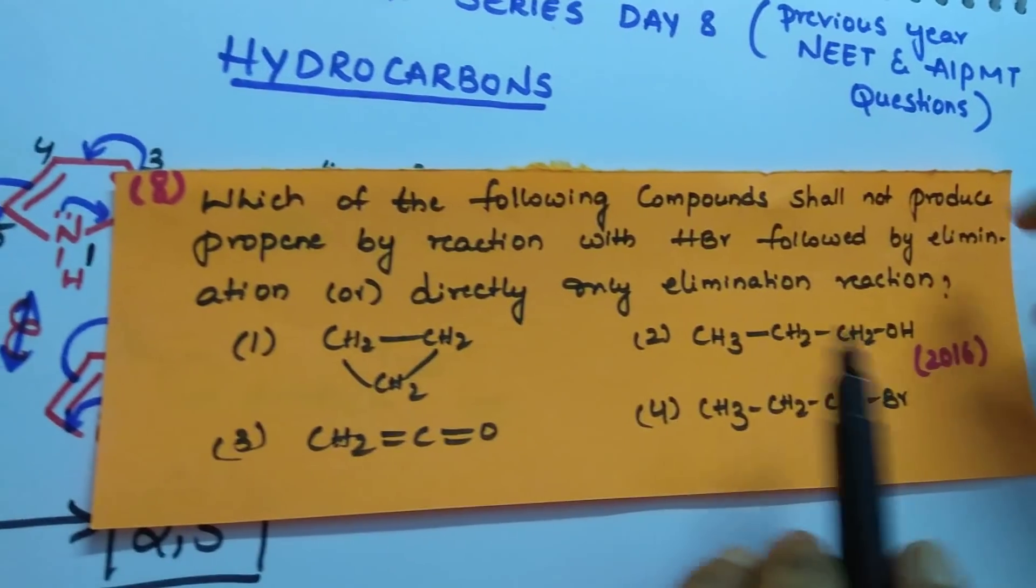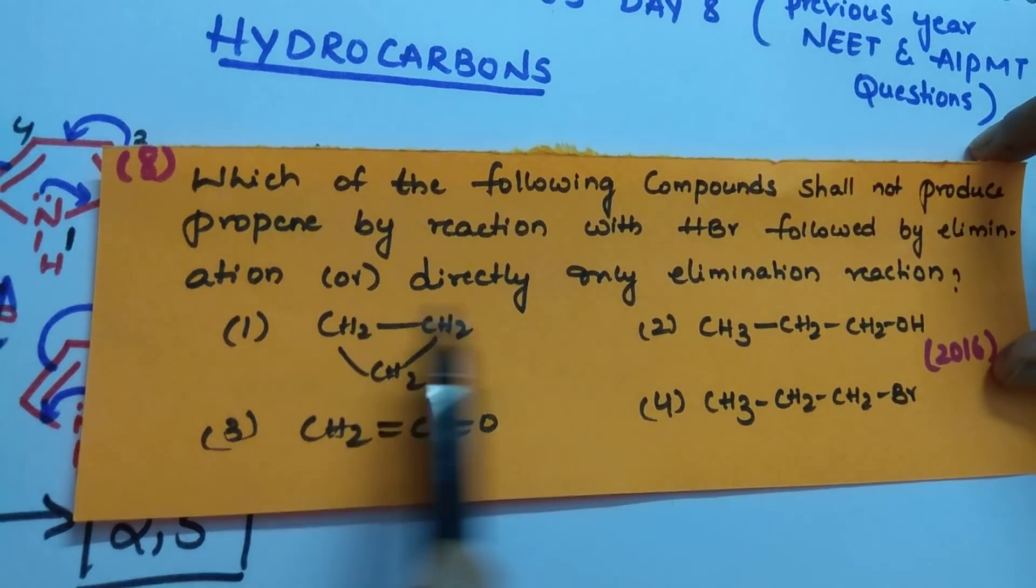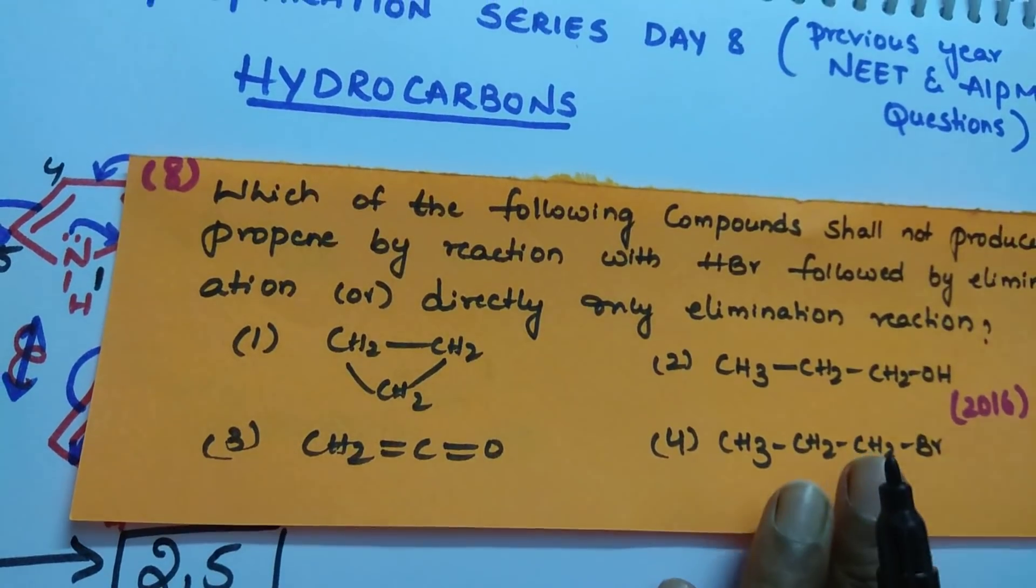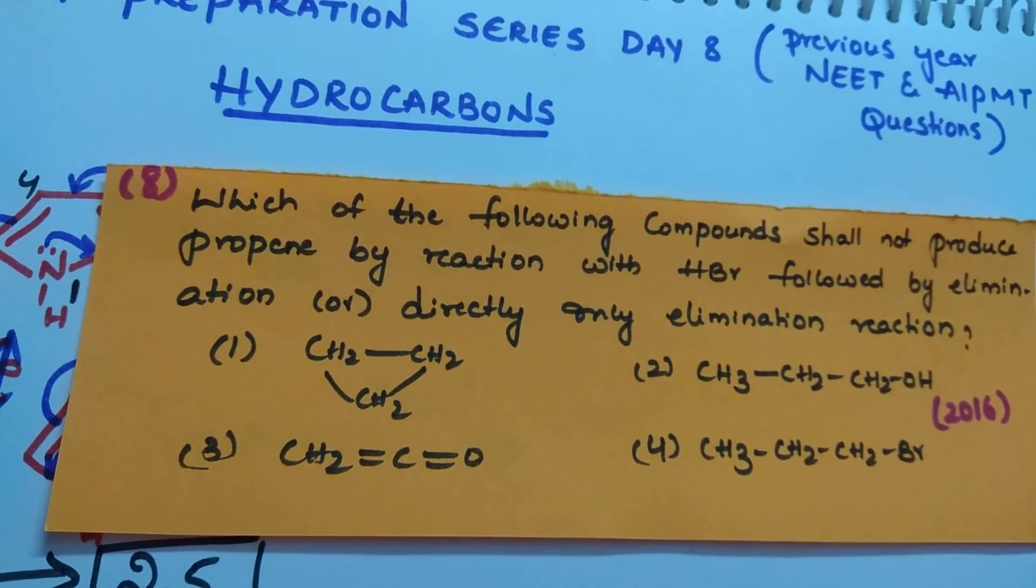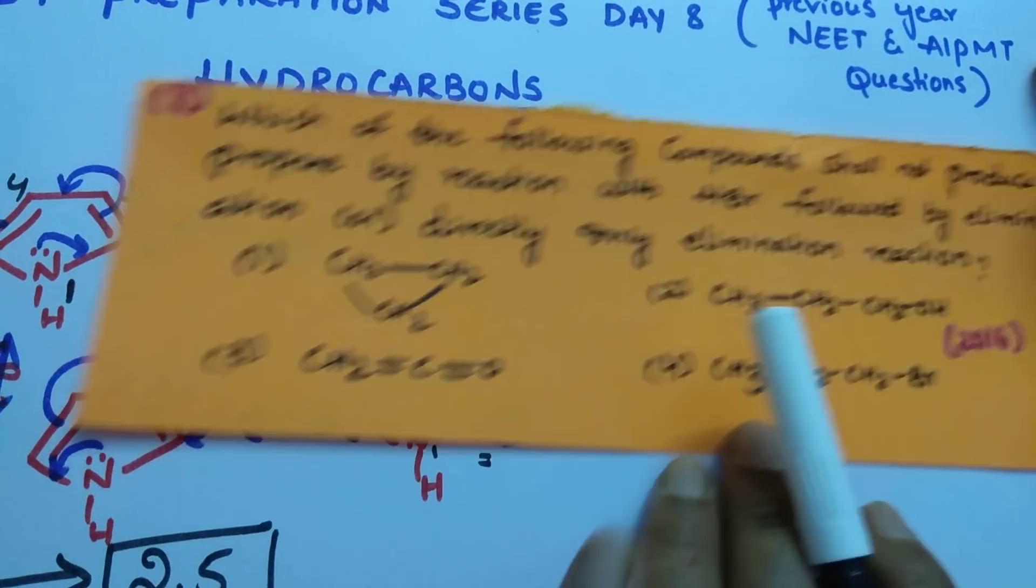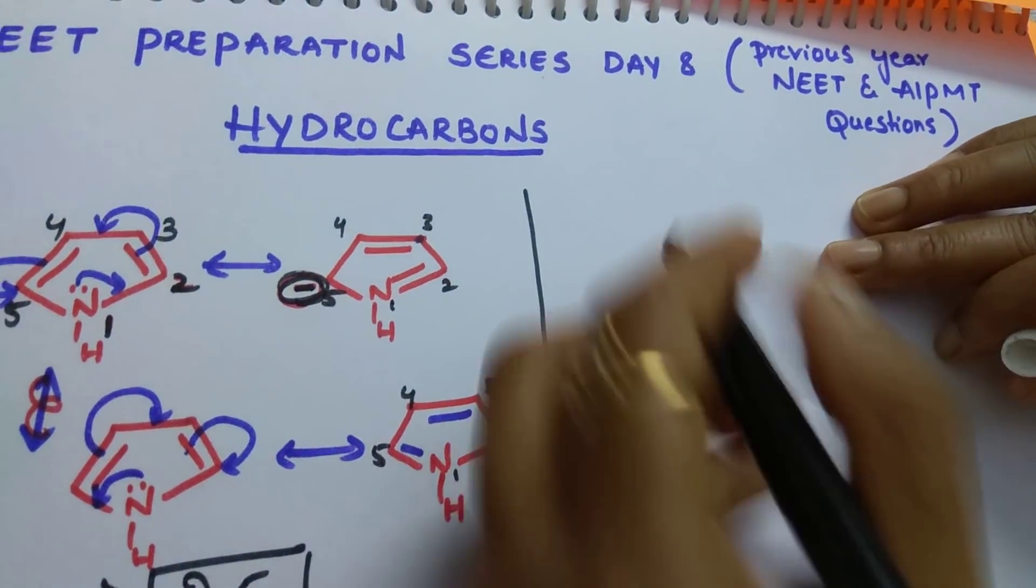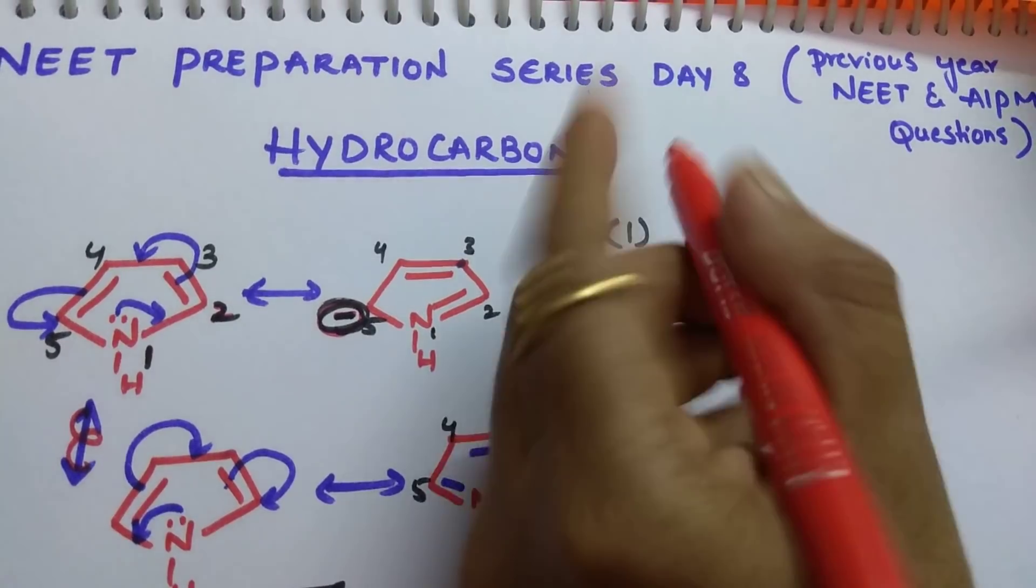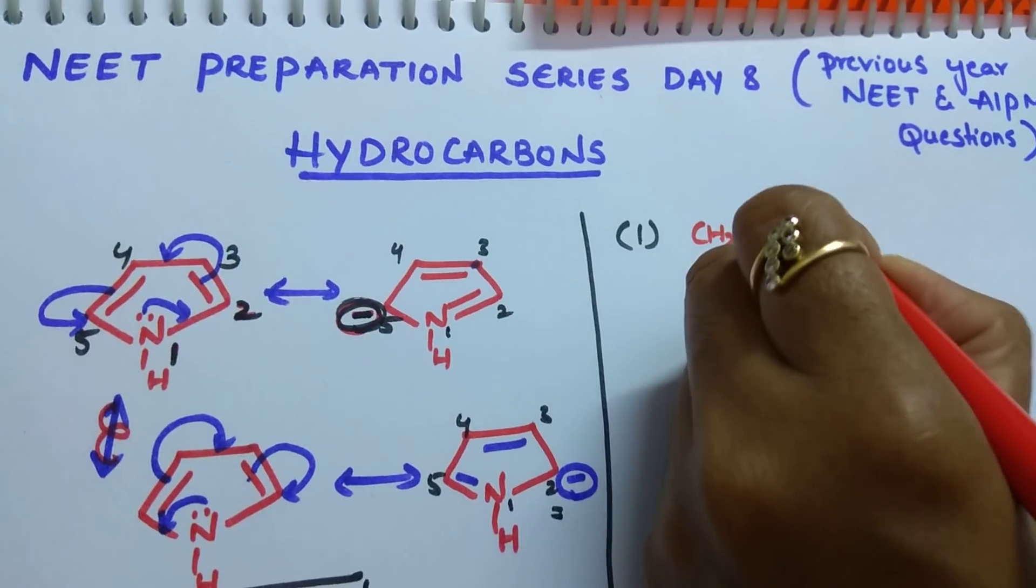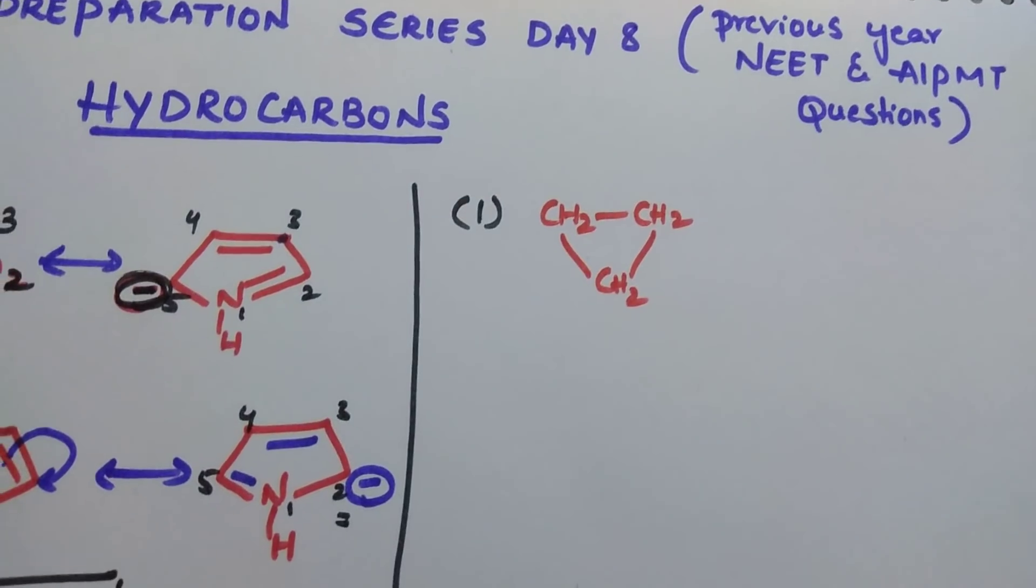Next question. Which of the following compounds shall not produce propene by reaction with HBr followed by elimination or directly only elimination? Either direct elimination or reaction with HBr, later elimination also. Which one of the following won't produce propene? What is propene? Propene is a 3-membered alkene. So, see the first structure cyclopropene. What is the first structure? Cyclopropene.